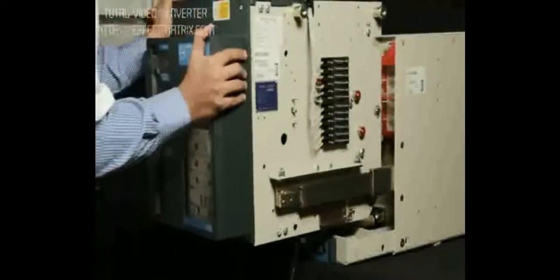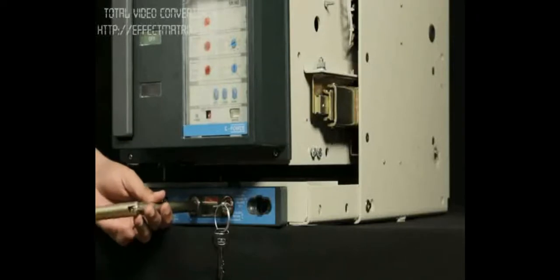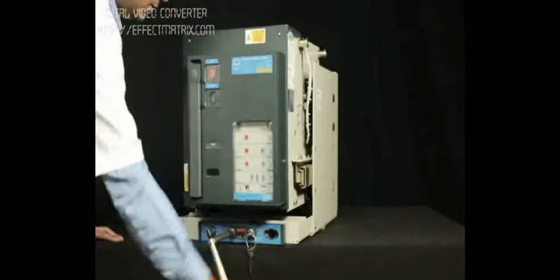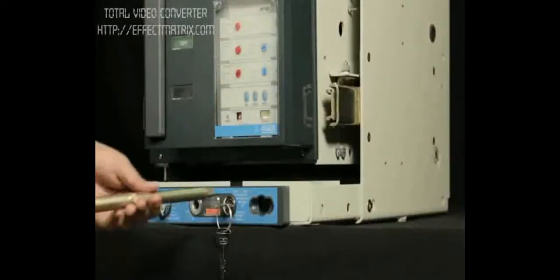Press and rotate the clamp back to lock the arc chute. Push the breaker to isolated position. Insert the handle in the slot provided for rack in and rack out. Insert the breaker to service position by rotating handle in clockwise direction.